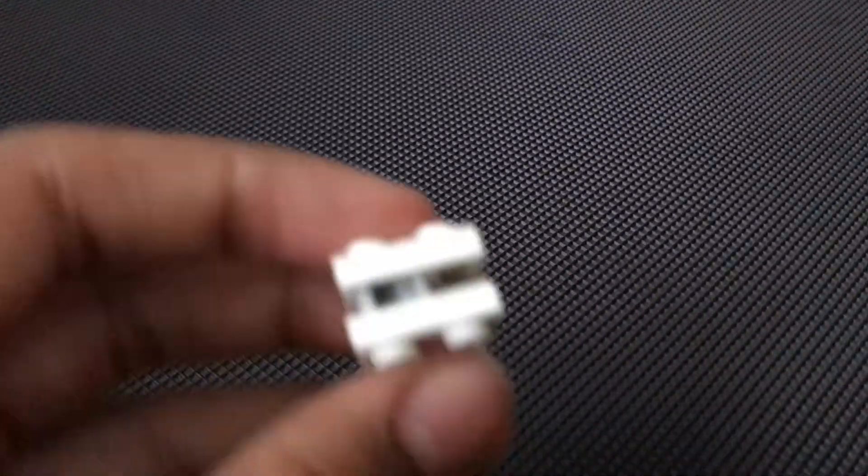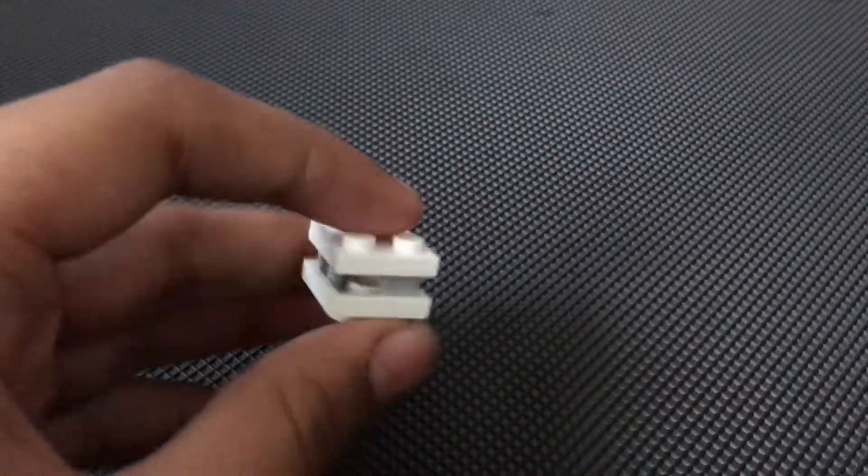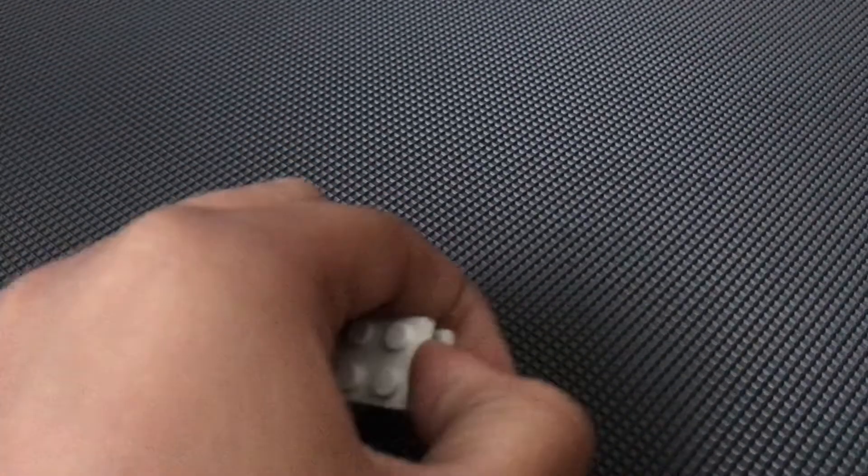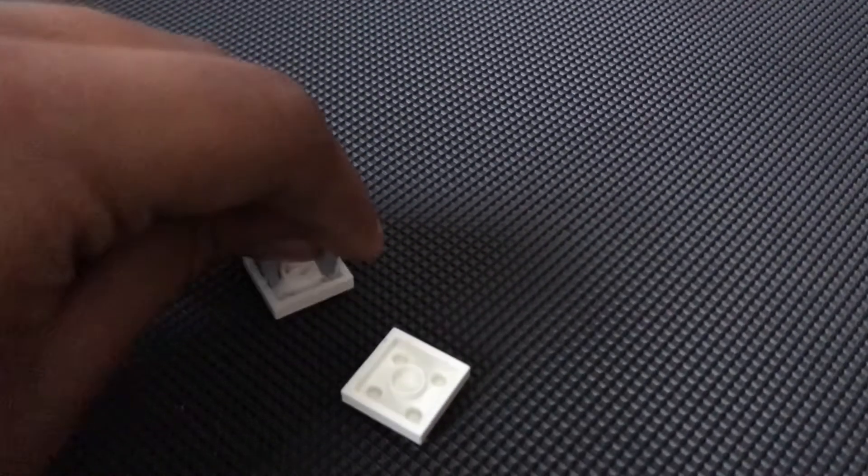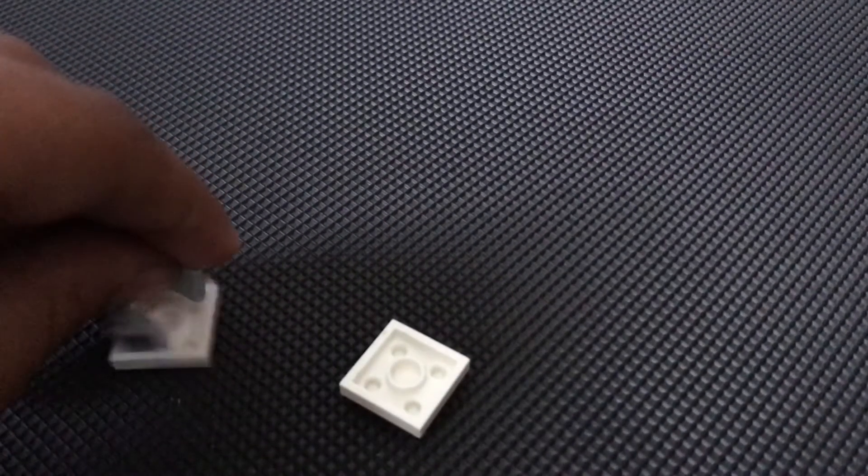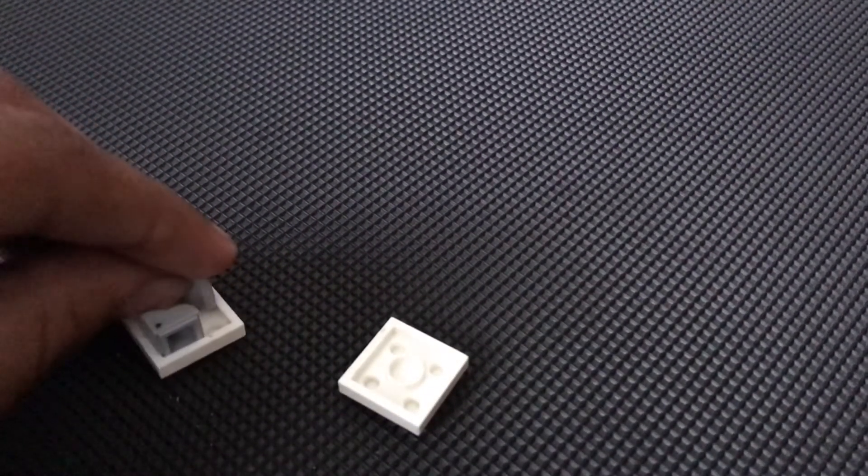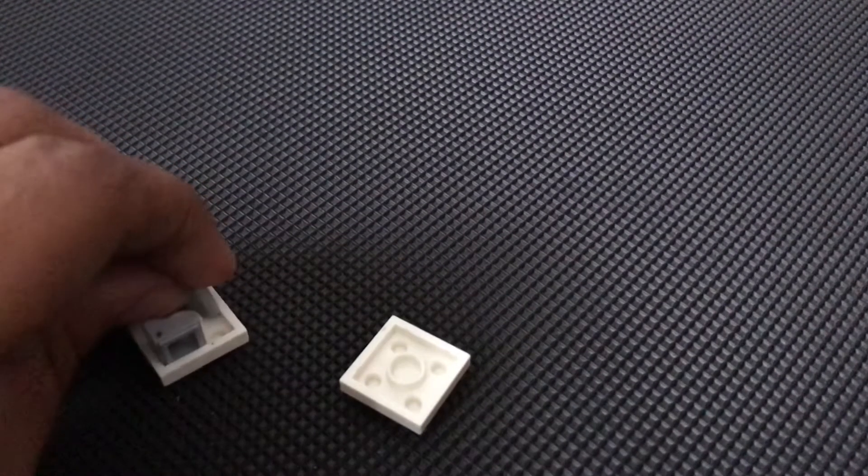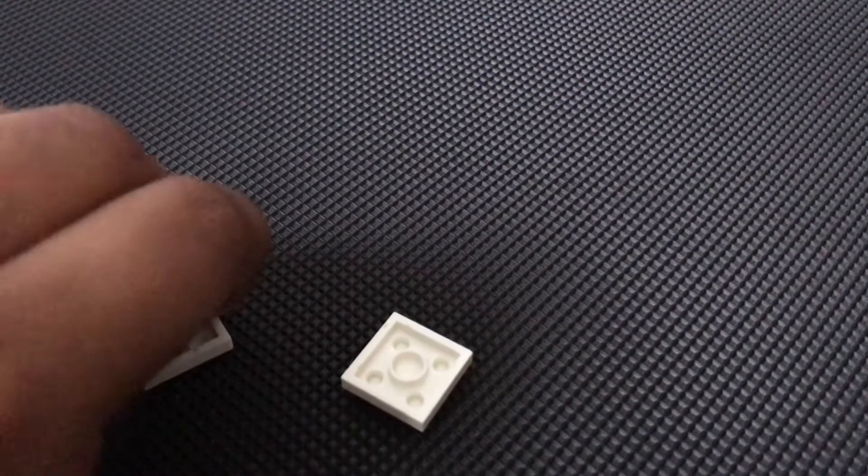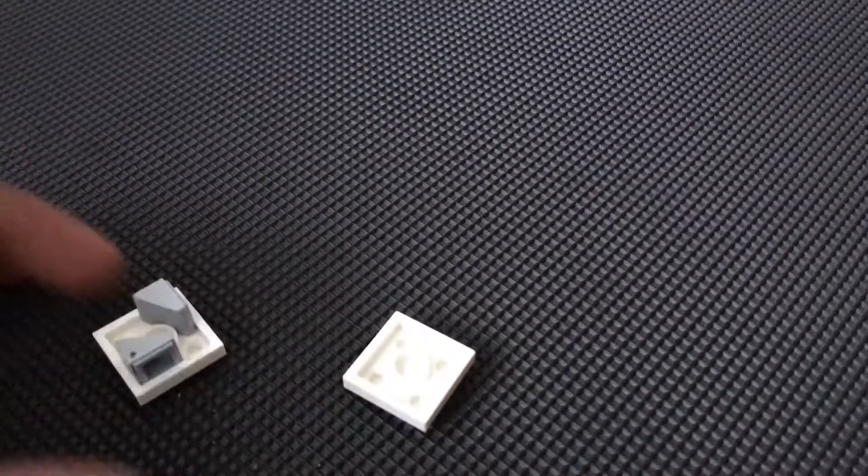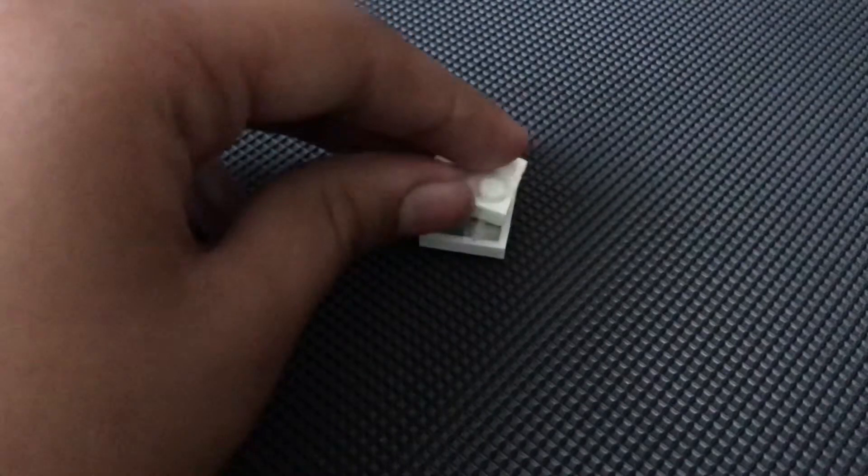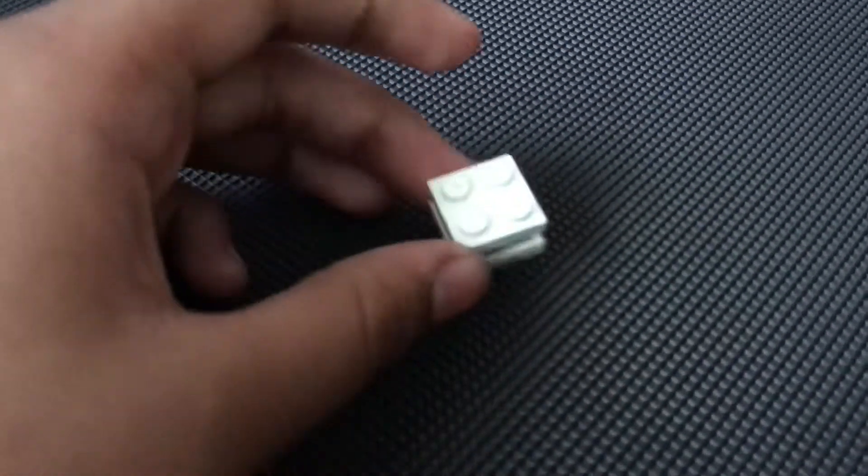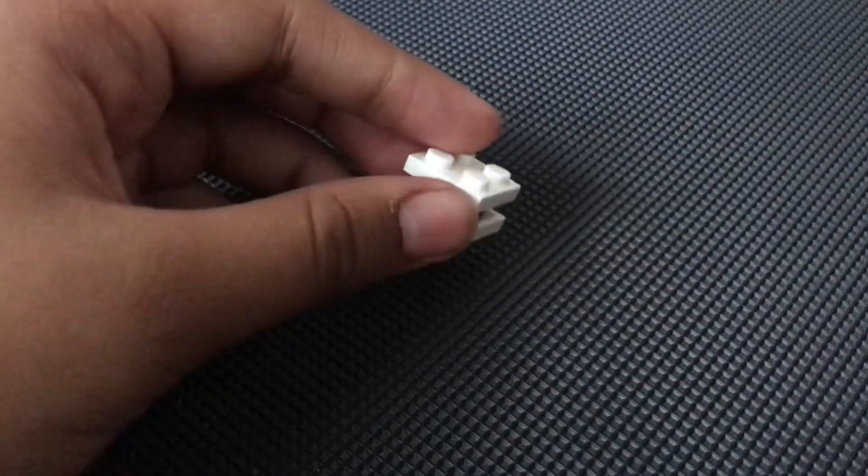On to the sixth one. We have this. This is the same thing except I did it with plates. We have these two slopes that you can put in between the bottom of the plates, and then attach them together. This is done with 1x1s instead of 1x2s like the bricks.